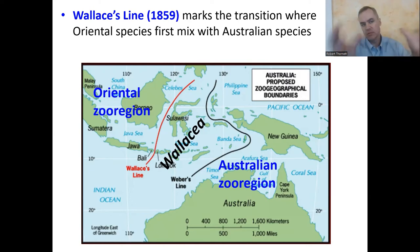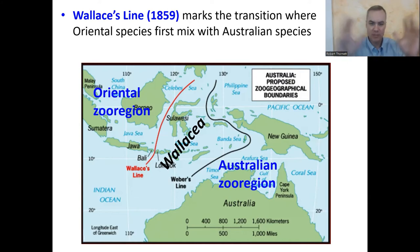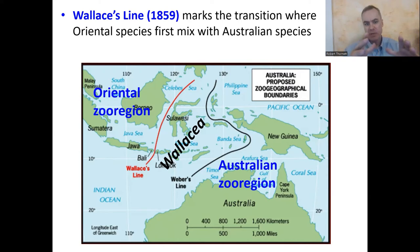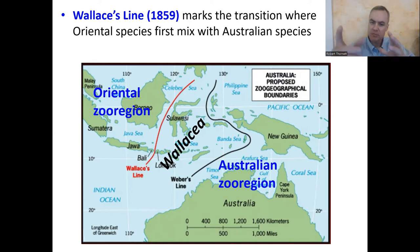He noticed a certain group of species on these islands — Indonesia has 11,000 islands, the Philippines over 8,000. There's a point where that red line is where the Oriental, or Southeast Asian, species go right up to the line and no further. But as soon as you cross that red line, you start getting Australian zoo region species mixed in. That middle area is called Wallaceia — a mixture of Australian and Oriental zoo regions.